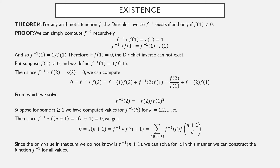Proceeding in this manner, you can declare the value of f inverse on all inputs. Therefore, on the initial assumption that f of 1 is non-zero, f inverse does actually exist — through this method of declaring what value it must take for every input.